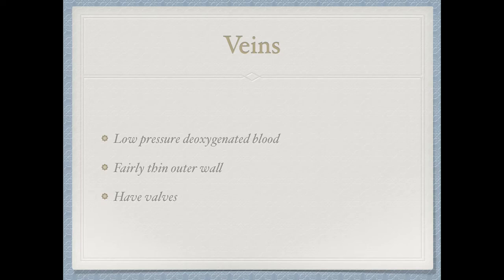Veins have a relatively low pressure and carry deoxygenated blood, whereas arteries carry oxygenated blood. Veins have a fairly thin outer wall and a very large lumen because much of the blood pressure has been lost, so there is no need for very large walls. Veins also have valves. The blood is carried down to the feet by the artery but needs to be taken upwards to the heart — blood doesn't just flow upwards against gravity. The valves in the veins ensure that once the blood flows past, they close to prevent blood from flowing back.